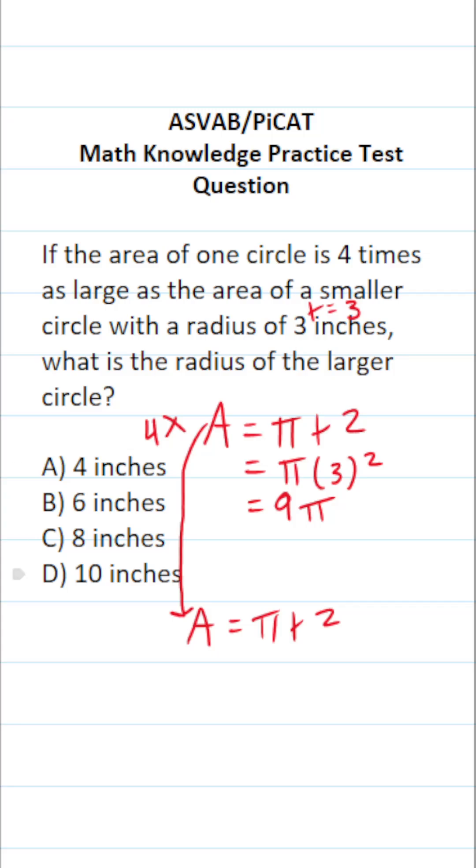We know the area of this bigger circle is four times that. So what is nine pi times four? Well, nine times four is 36, so it's going to be 36 pi. We know the area of the bigger circle is going to be 36 pi.